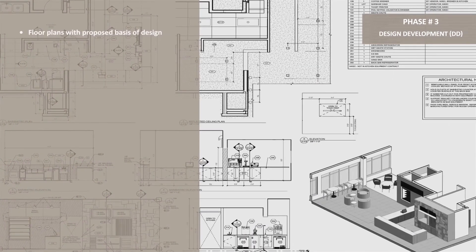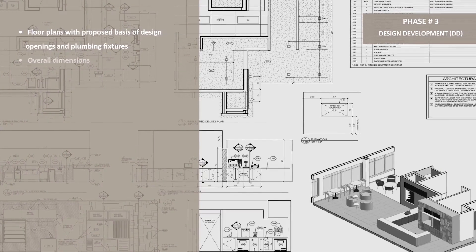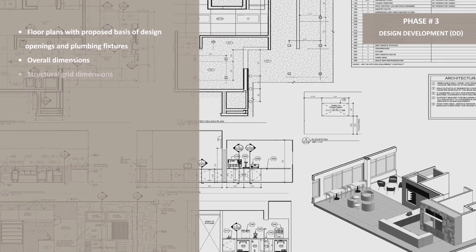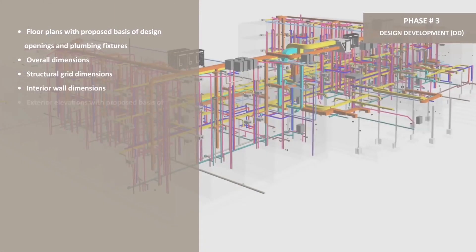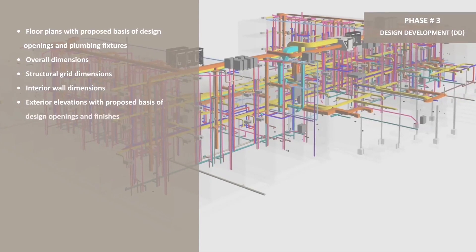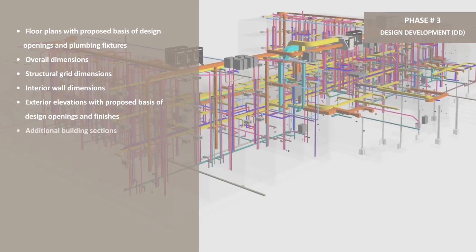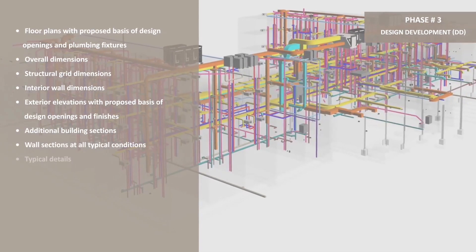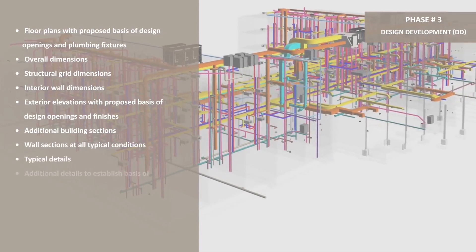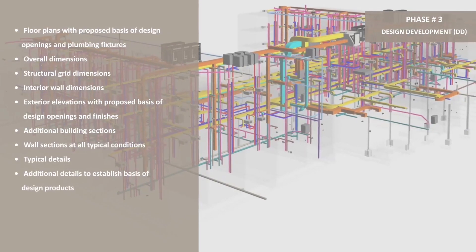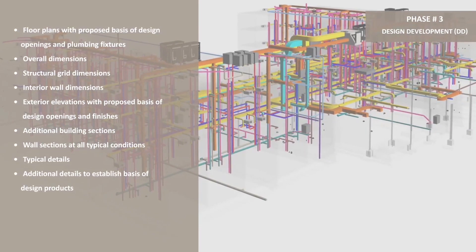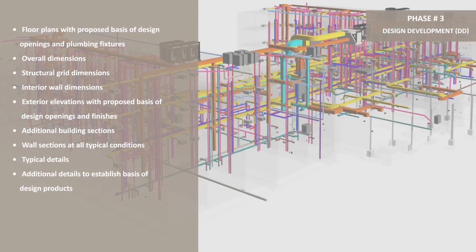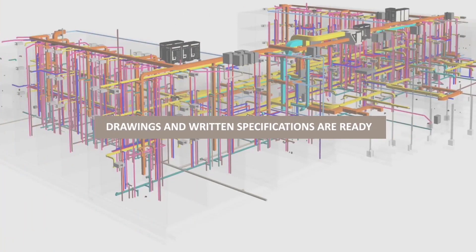Phase 3: Design Development. Design development collects the results from the schematic design phase and takes them one step further. This phase involves finalizing the design and specifying items such as materials, window and door locations, and general structural details. By now we have given shape to the project's vision through drawings and written specifications.